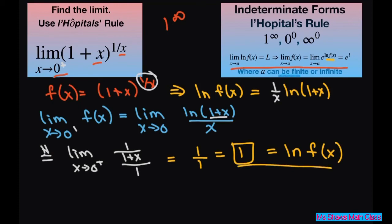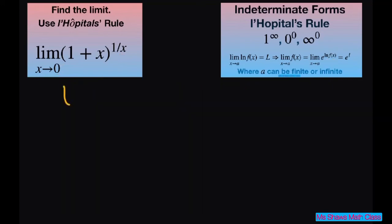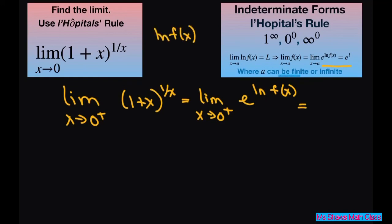So now using our formula, we're going to get the limit as x approaches 0 from the right of 1 plus x to the power of 1 over x equals the limit as x approaches 0 from the right of e to the power of ln of f of x. That's using this formula, and so our ln of f of x was 1, so we have e to the first power.